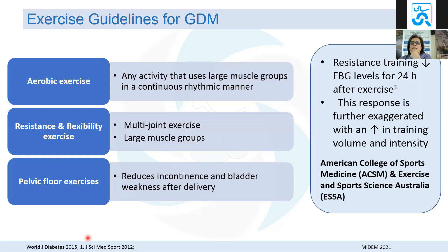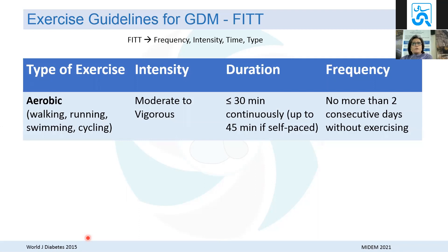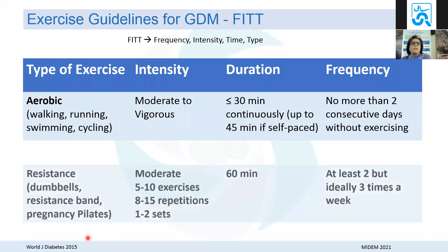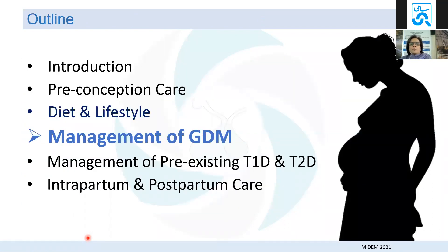Exercise guidelines are not very different from standard recommendations: 30 minutes of aerobic exercise per day, not more than two consecutive days of rest, at moderate intensity — swimming, cycling, running, or walking — combined with resistance training using a resistance band, pregnancy pilates, or calisthenics using body weight. Medical nutrition therapy and exercise are very important components of managing GDM.